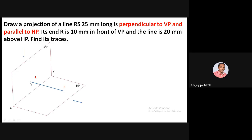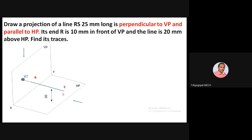If you extend line RS, it will definitely meet the vertical plane VP — this meeting point is the vertical trace. Since RS is parallel to the horizontal plane, even if you keep extending the line, it remains parallel to HP. So no horizontal trace can be obtained.